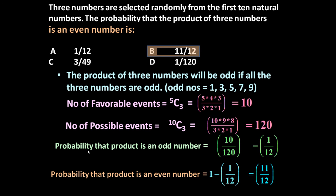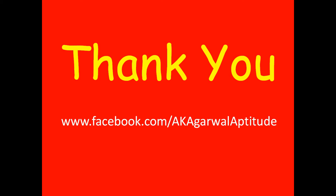So if the product of 3 numbers is odd, then probability is 1/12. If the product of 3 numbers is even, then the probability will be 11/12. Thank you very much for watching this video. You can also follow me on Facebook. Thank you very much.